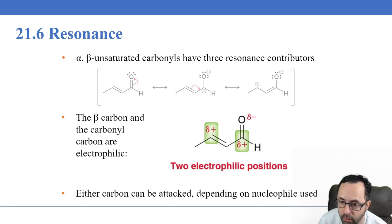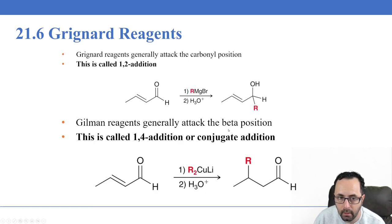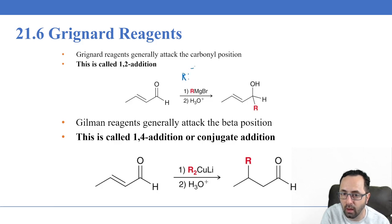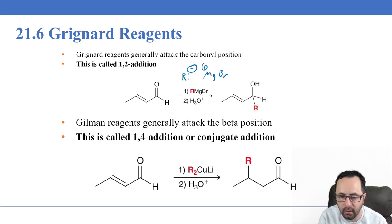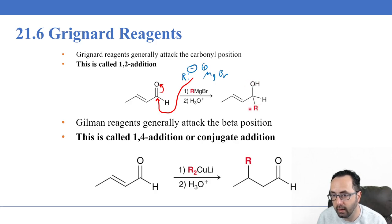There are two electrophilic positions in an alpha-beta unsaturated carbonyl: the carbonyl carbon (1,2-addition) and the beta carbon (1,4-addition). Grignard reagents — strong nucleophiles and strong bases — generally attack the carbonyl carbon in a 1,2-addition, forming an alkoxide ion. After treatment with acid to protonate the alkoxide, we get an alcohol with added carbon atoms.